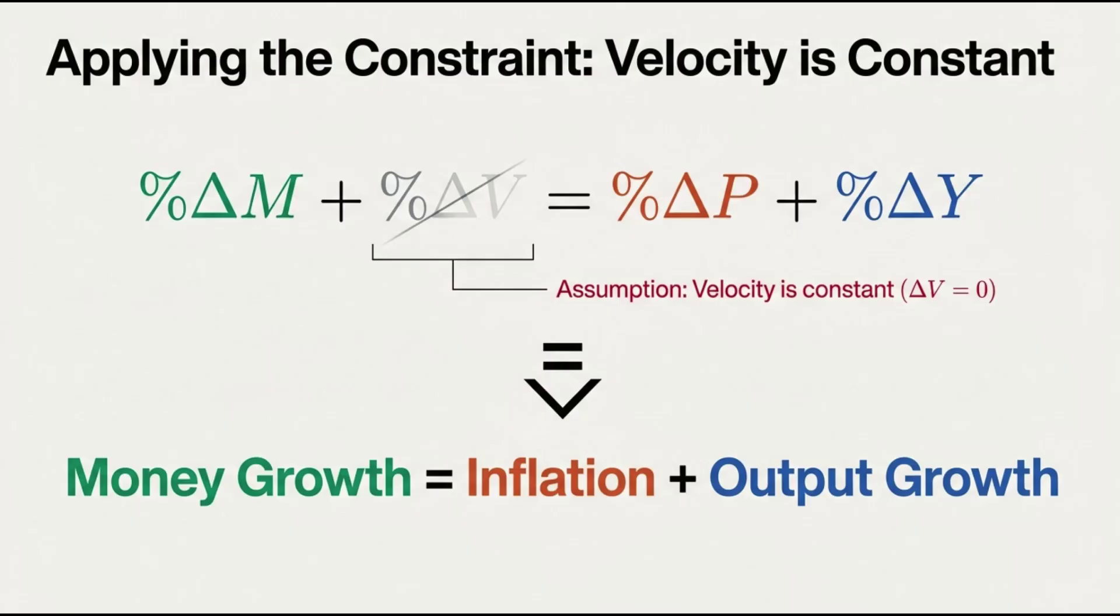And here is a really important detail tucked away in the case file. The classic version of this theory works on one big assumption, that the velocity of money, the speed at which it gets spent, is constant. It just doesn't change. So for our puzzle, we're going to run with that assumption.